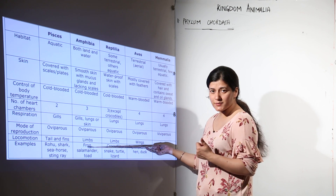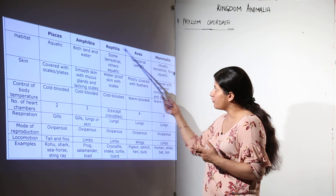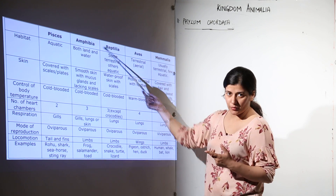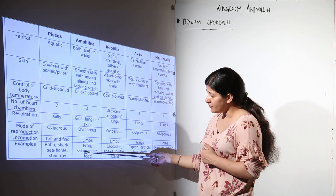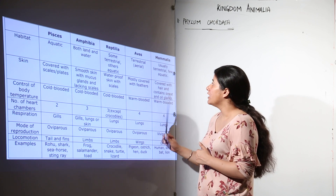Locomotion in amphibians is by limbs because these are tetrapods. Examples include frog, toad, and salamander.